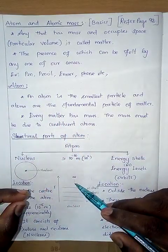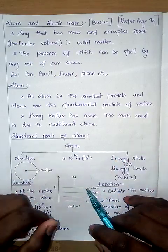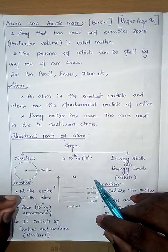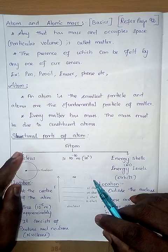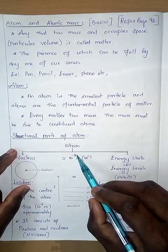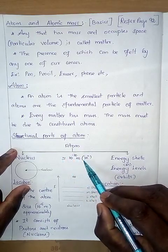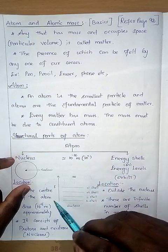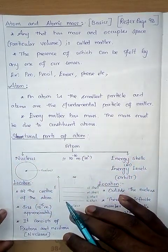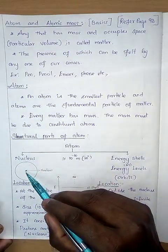Now I have one more question: where does the mass of an atom come from? In order to answer this question, we need to know the structural parts of an atom. The atom is very very small — approximately 10 to the power of minus 10 meters, that is equal to 1 Angstrom.